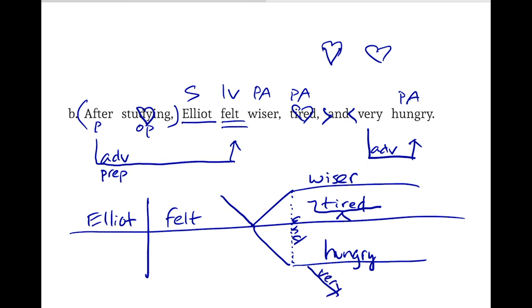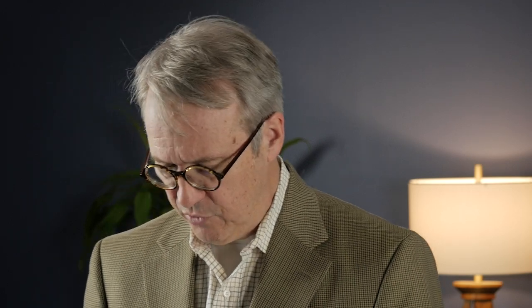We need to do something with the adverbial phrase 'after studying' — this prepositional and adverbial phrase. Because it's modifying FELT, we'll have a line coming from FELT. He FELT after — after doing what? After studying. And because 'studying' was also a verbal, we'll put it on the little lawn chair.